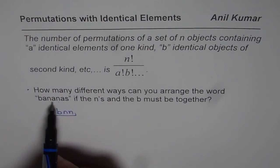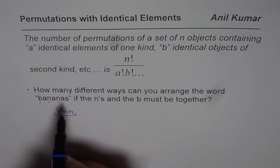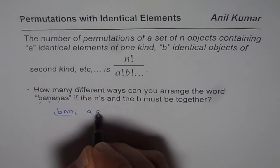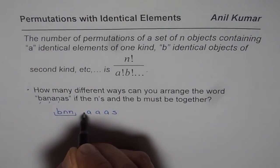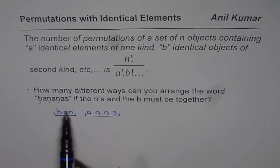From this word 'bananas', if I take away b, n, and n, I am left with a, a, a, and s. So these are the other letters which are left. That makes bananas. Now, these should be together. That's the reason why I have kept it as one group.